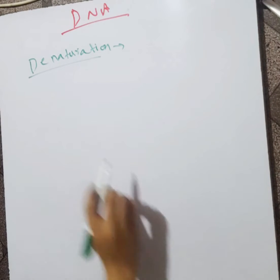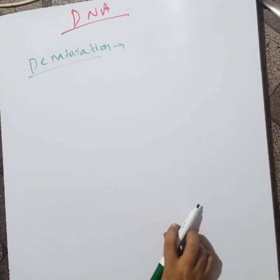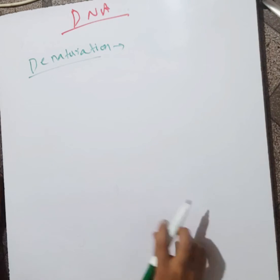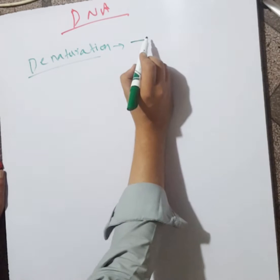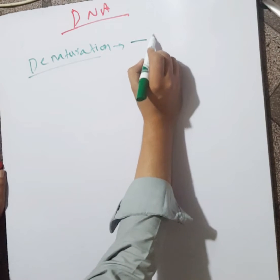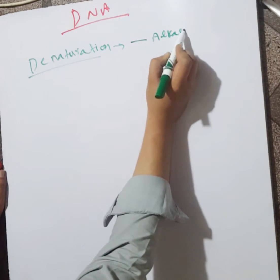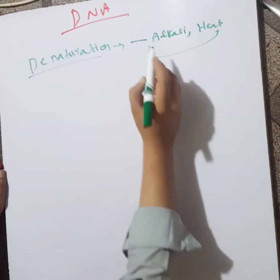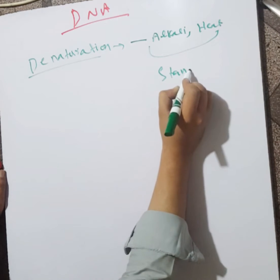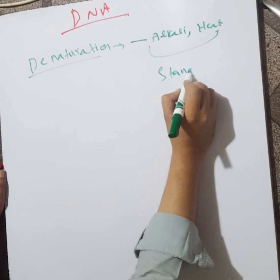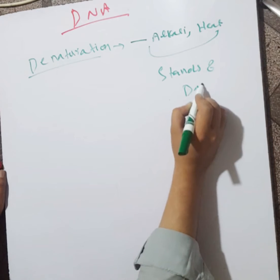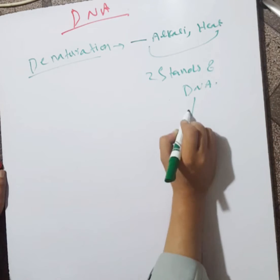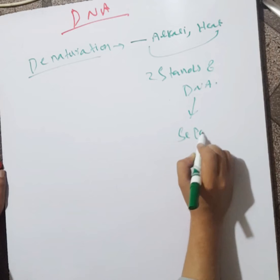What is DNA denaturation? Alkali or heat causes the strands of DNA to separate. When the strands of DNA are separated by the help of alkali or heat, the two strands of DNA become separated.